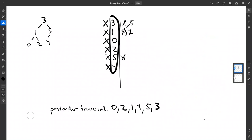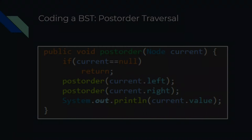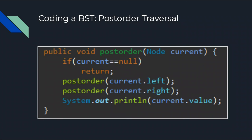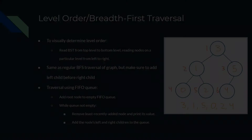For coding post-order traversal: you traverse the left subtree, then the right subtree, and then print out the value. It's exactly what we did in the traversal table and matches the recursive steps listed on the slide.